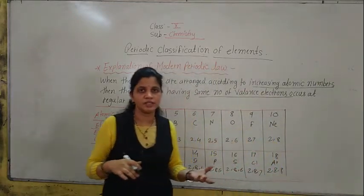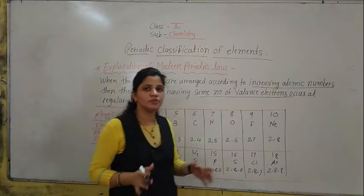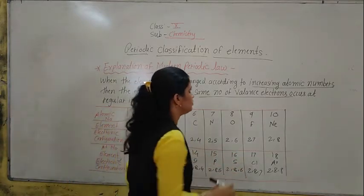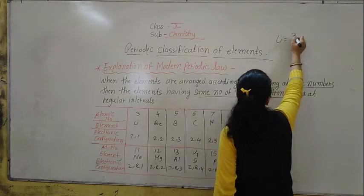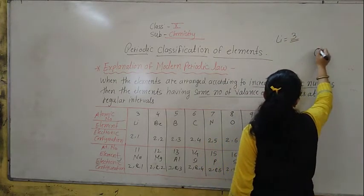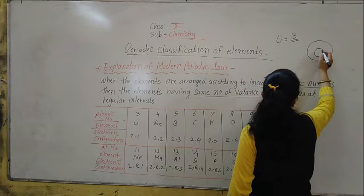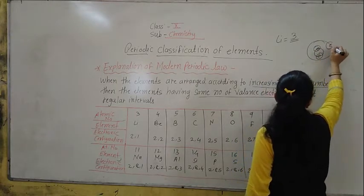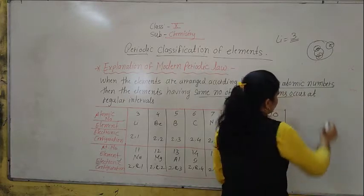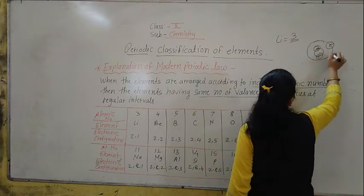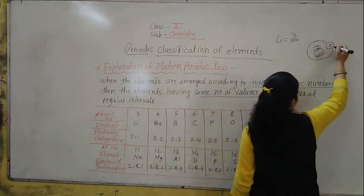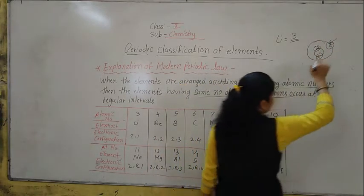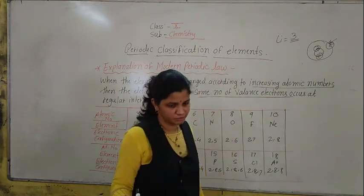Yesterday also we discussed that whatever electrons are present in the outer shell — for example, lithium has atomic number 3. So its electronic distribution is two electrons in the first shell and one electron in the second shell. This outermost shell is known as the valence shell, and the electrons present there are called valence electrons.